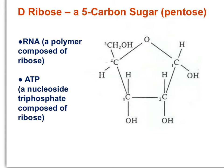D-ribose is a component part of RNA, the nucleic acid polymer. D-ribose is also a component part of ATP — adenosine triphosphate — which is an energy molecule within the cell.